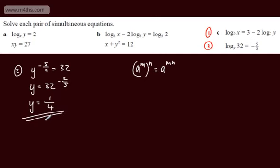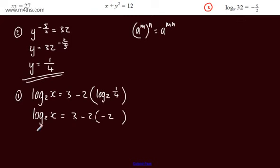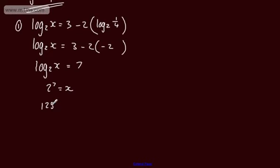I'm going to substitute y equals 1 quarter into equation 1. So we have log to the base 2 of x equal to 3 minus 2 lots of log to the base 2 of one quarter. Log to the base 2 of one quarter is minus 2, so we have log to the base 2 of x equal to 3 minus 2 times minus 2, which gives log to the base 2 of x equal to 7. Writing the exponential equivalent, 2 to the power of 7 equals x, so x equals 128.